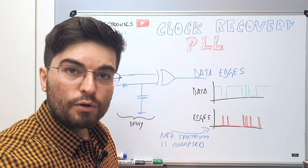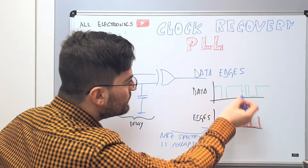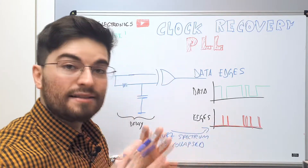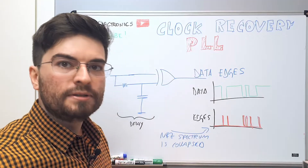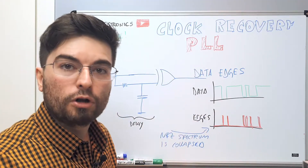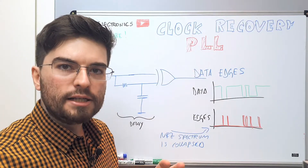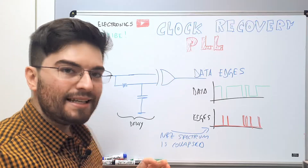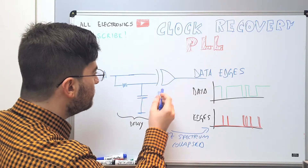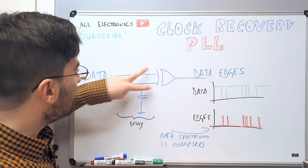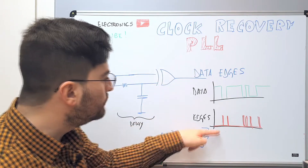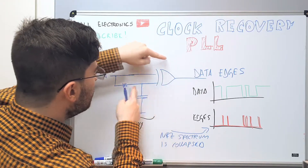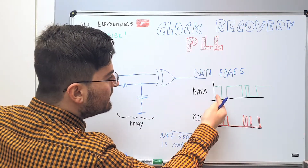The first thing we are going to do is build an edge detector that will detect the edges of the data bitstream. We'll use an XOR gate with a delay on one of its inputs. Any time the two inputs are different, the XOR gate will output a pulse. So when the data changes, the small difference between the inputs generates pulses exactly at the transitions of the data.